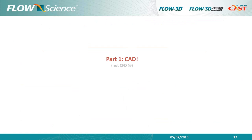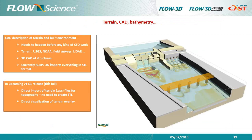The CAD step requires a description of the terrain — from sources such as USGS or LiDAR — and 3D CAD of built structures. All of this gets imported in STL format into FLOW-3D. In the upcoming version 11.1, released this fall, you will be able to import terrain files directly without converting to STL, and overlay visual maps within FLOW-3D.